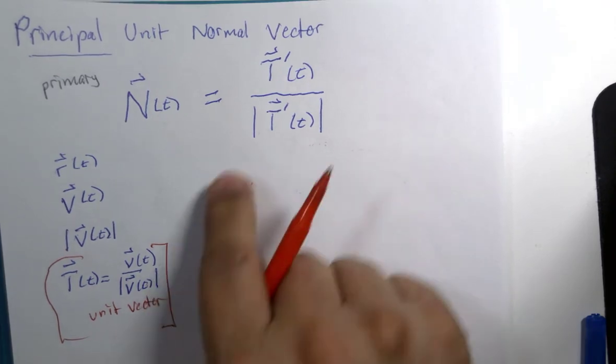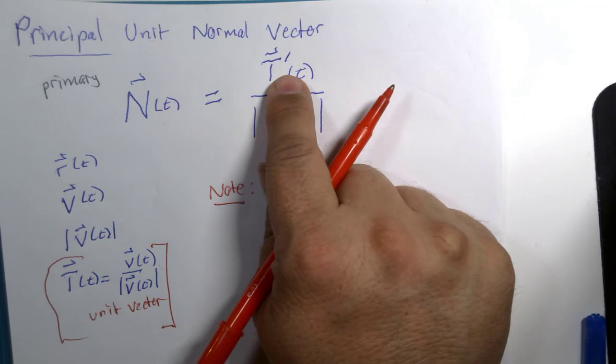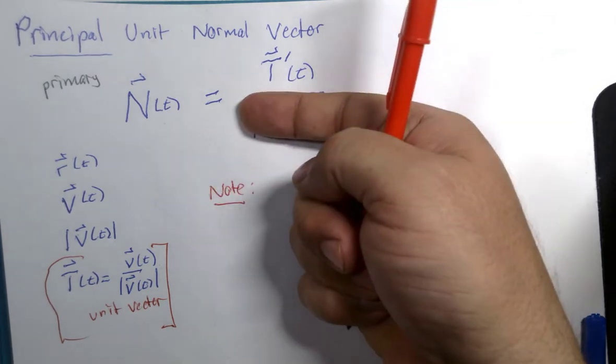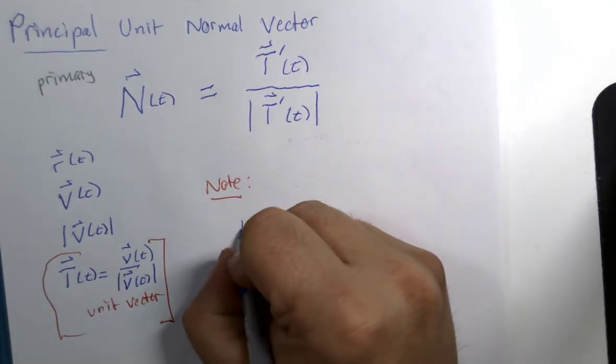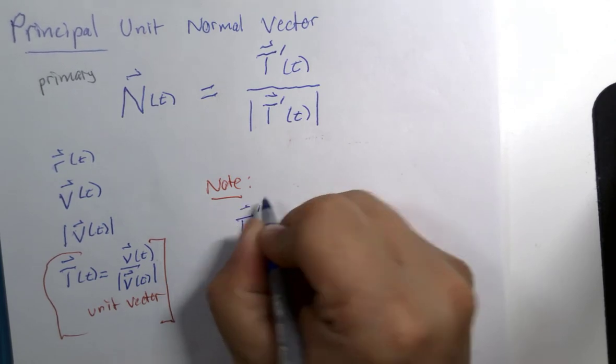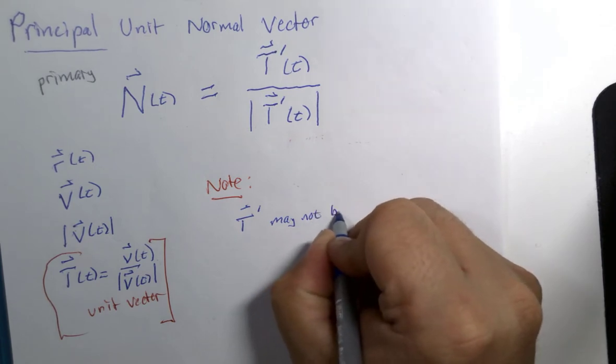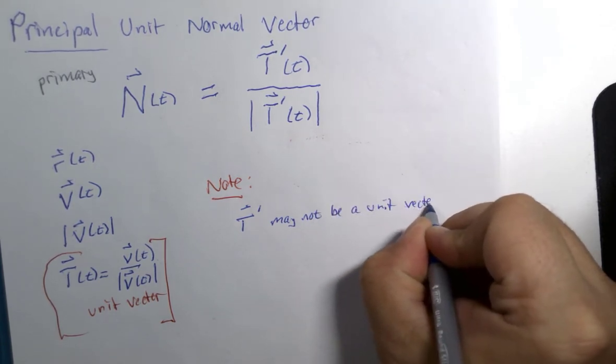Apparently when you take the derivative, it may not be anymore. Because look, we have to divide by the magnitude again. If you took the derivative and it was already a unit vector, you wouldn't need this. So let's just put as our first little note: T prime may not be a unit vector.